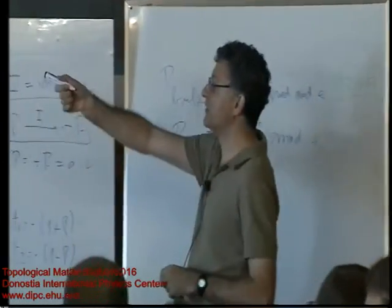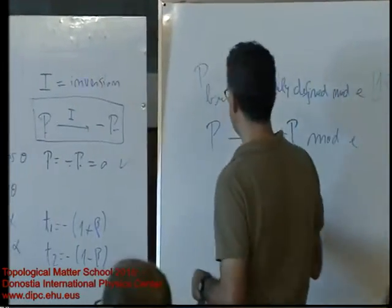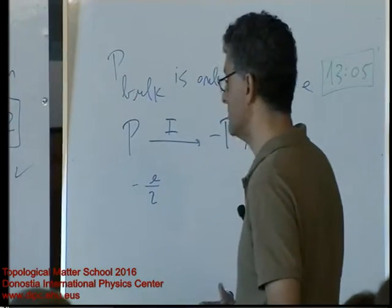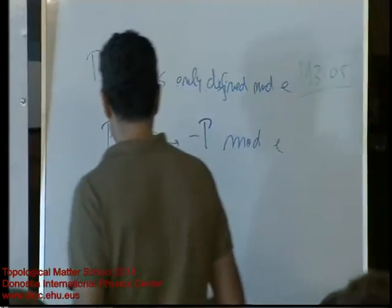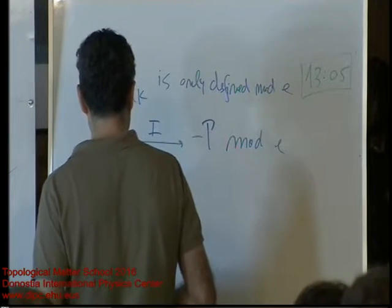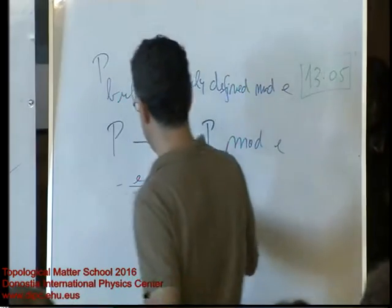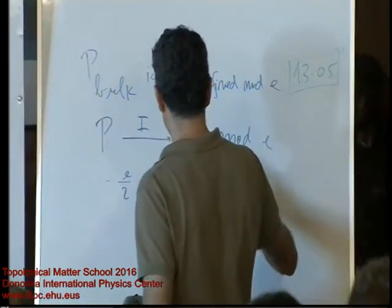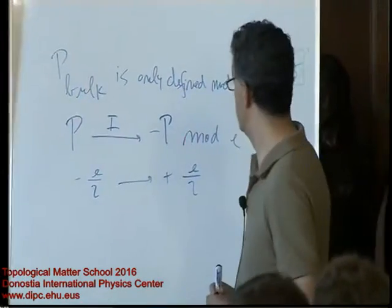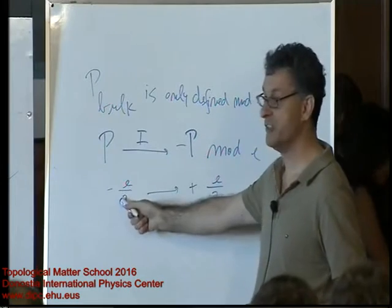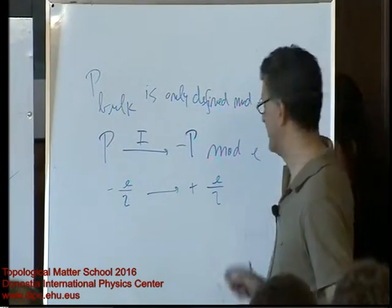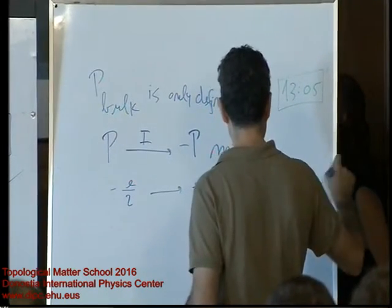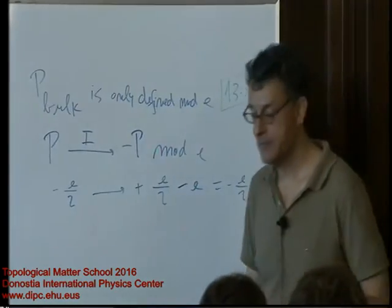The polarization at theta equals zero is minus e over 2. If we change the sign, we get plus e over 2, which is the same as minus e over 2 modulo e, because if I subtract e, I get minus e over 2.